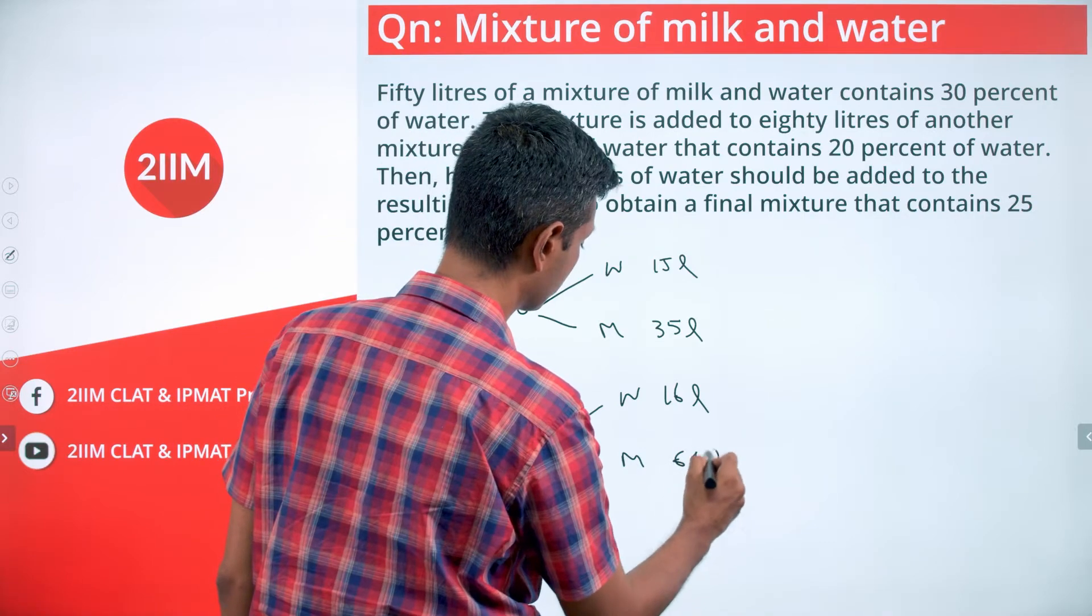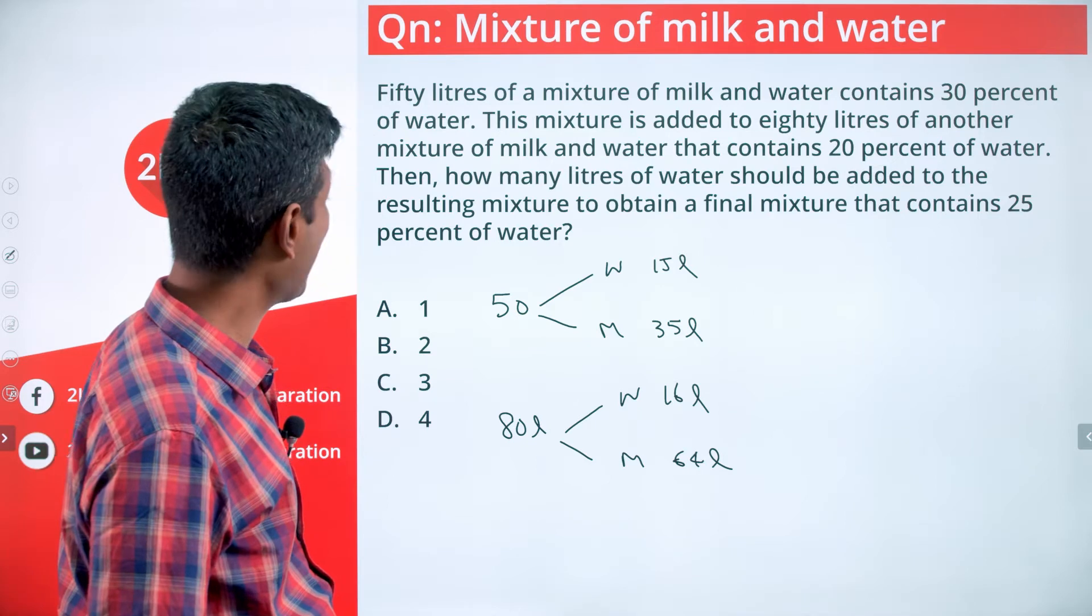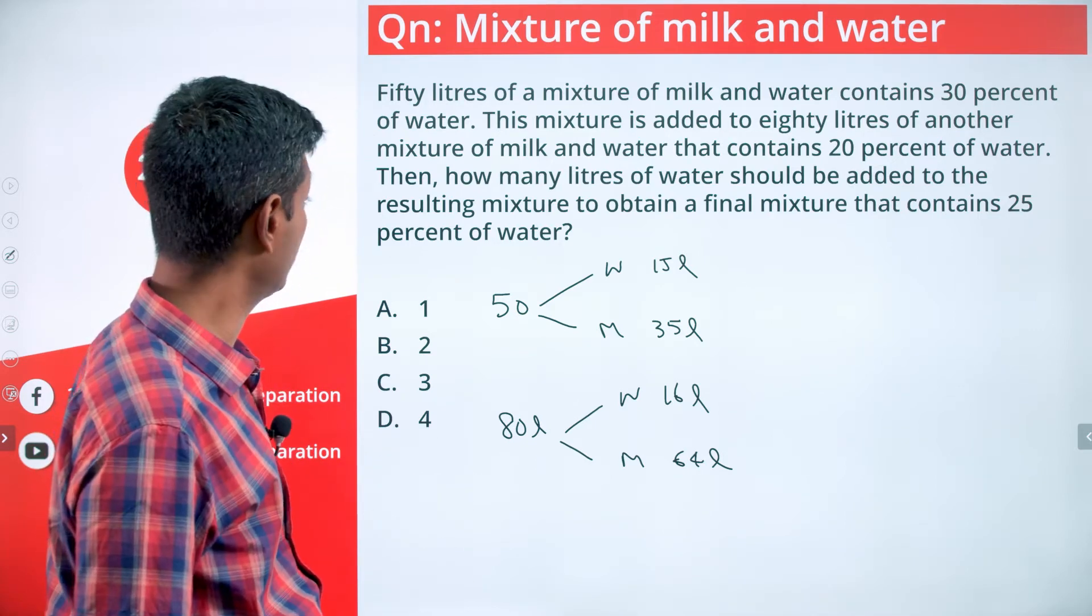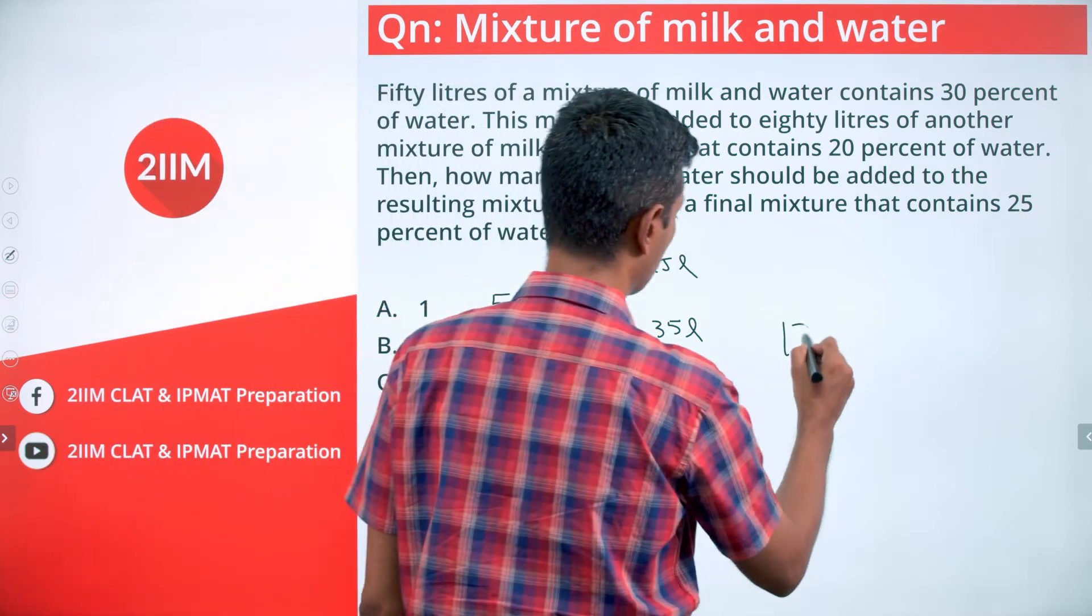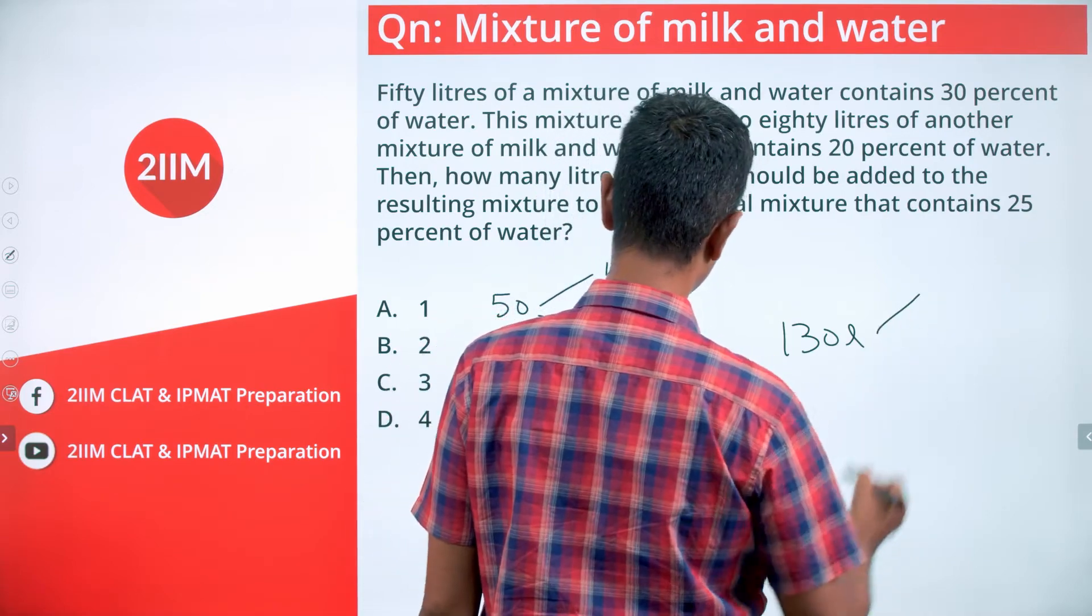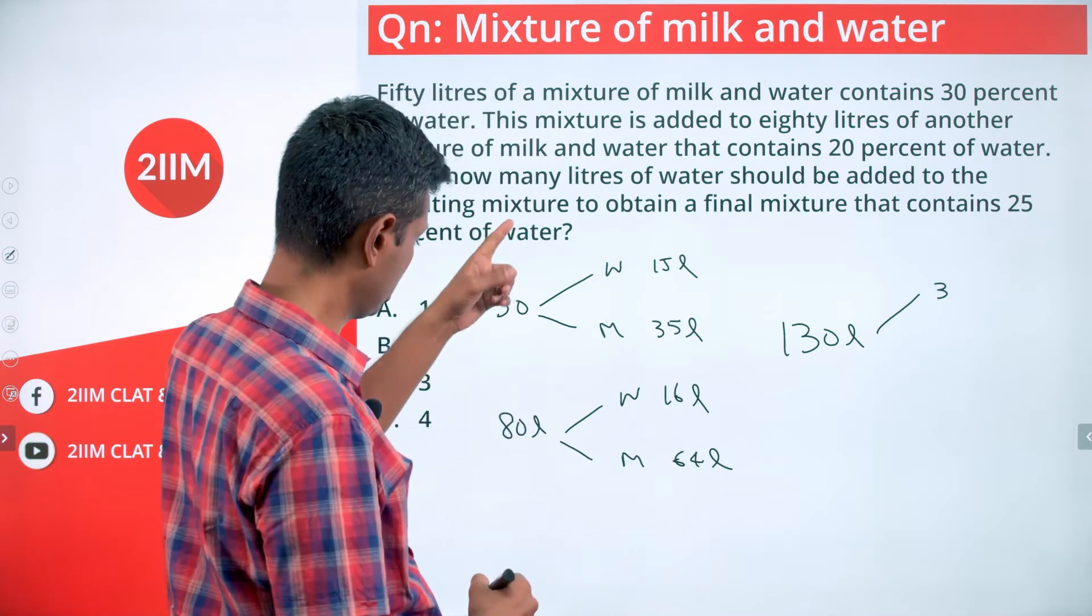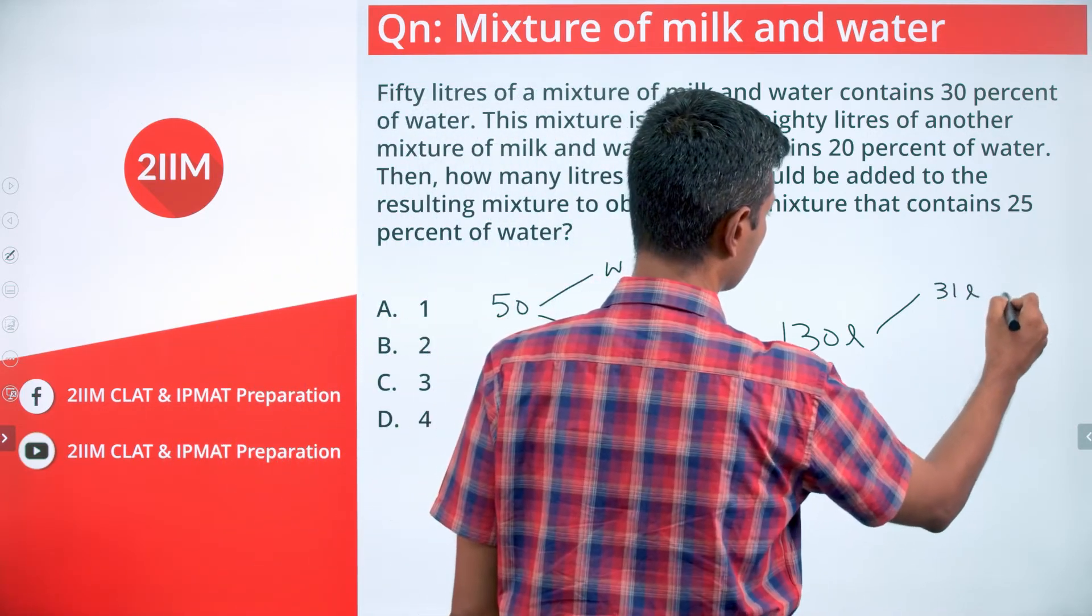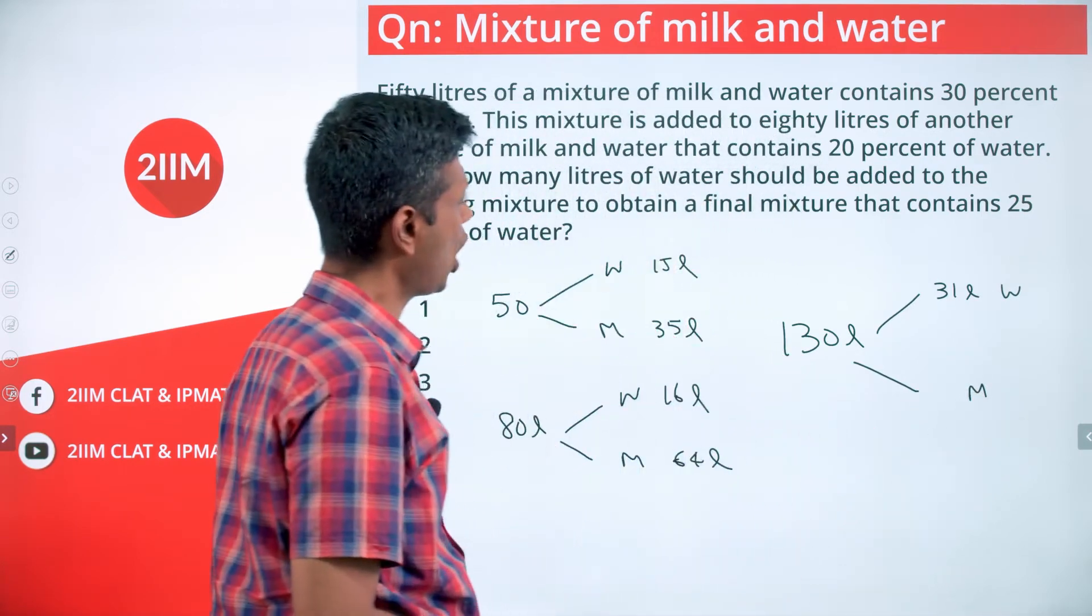How many liters of water should be added to the resulting mixture to obtain a final mixture that contains 25% of water? We're mixing these two. Out of 130 liters, 15 liters is water here and 16 liters is water here, so 31 liters is water and the remaining is milk.